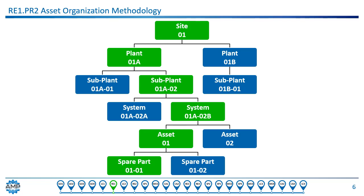We could start anywhere in this organization system and work up or down to find out what we need to know. This makes us efficient and effective when setting up maintenance tasks or reacting to an emergency. It's the same concept as having a junk drawer at your house where nobody can find anything, versus an organized drawer with everything labeled. So that's what asset organization methodology looks like.